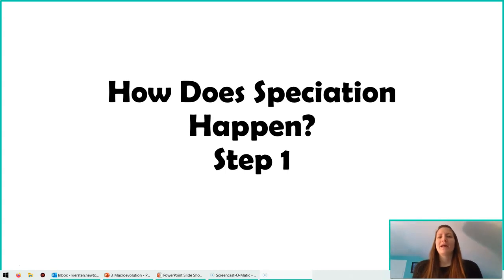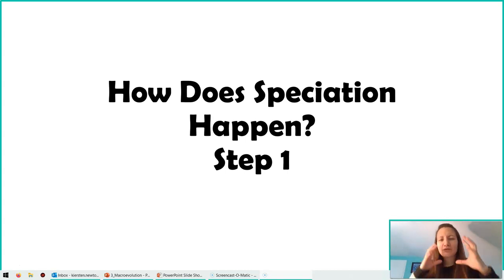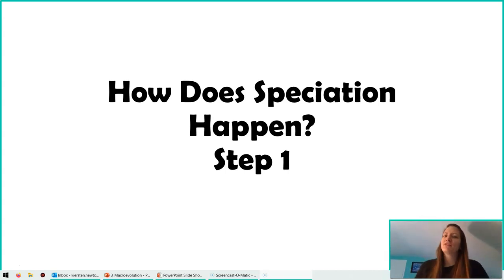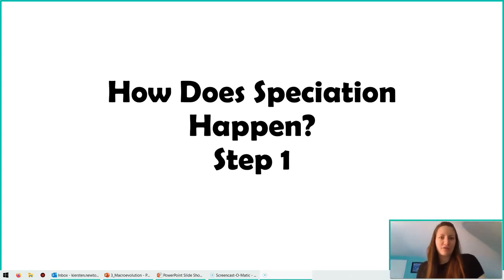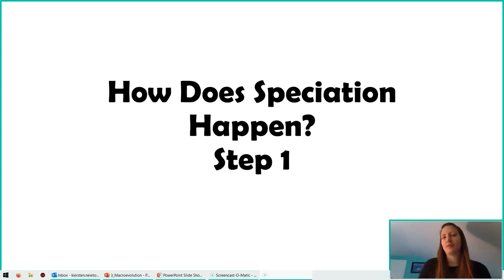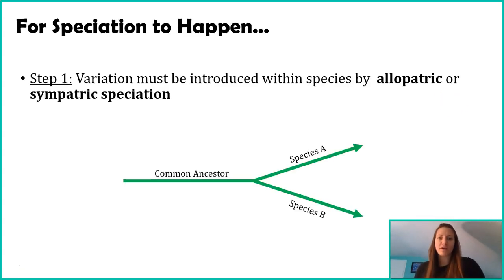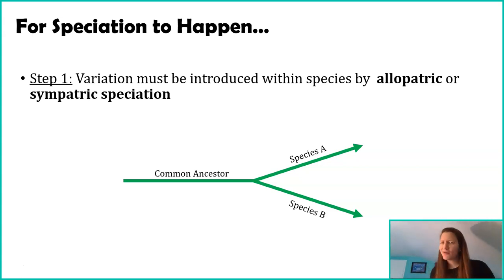For speciation to happen, we have two different steps that scientists outline. Try to keep in mind that this is a scientific construct — nature isn't out there saying we need something that likes fruits on top of trees. Scientists have broken down speciation to explain how it's happening. This video is going to explain the first part of speciation: you need to somehow introduce variation. We've talked about this before.